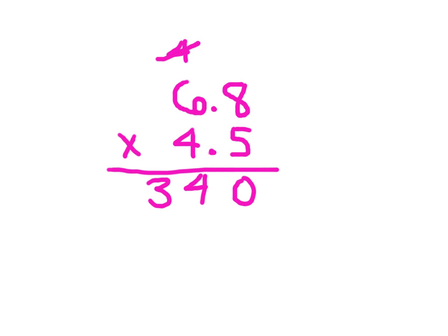That 4 is worth 40. That's why you place a 0. 4 times 8, which is 32. Place the 2, regroup the 3. 4 times 6, which is 24, plus 3, which is 27. And then we can add those two numbers together.